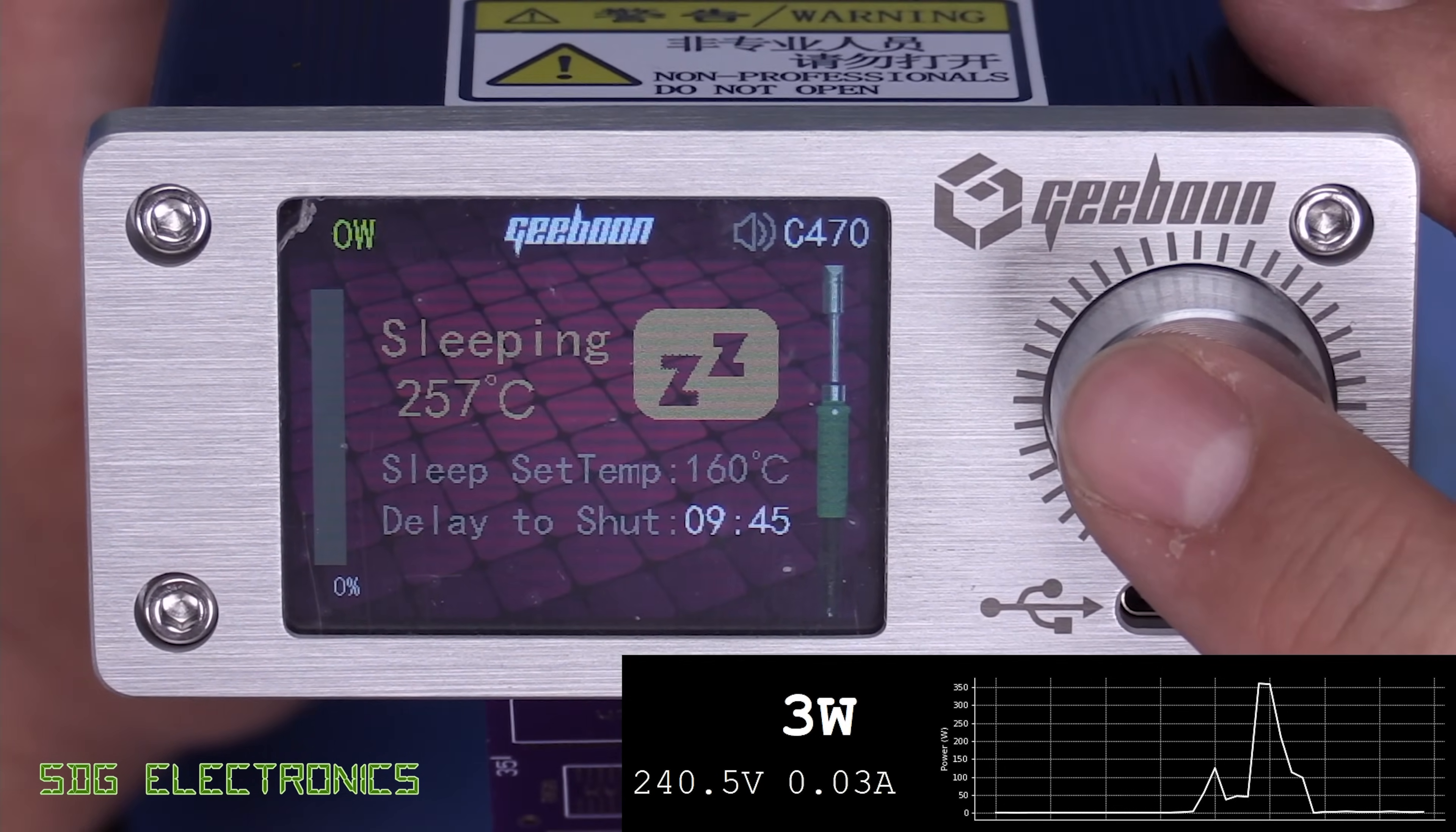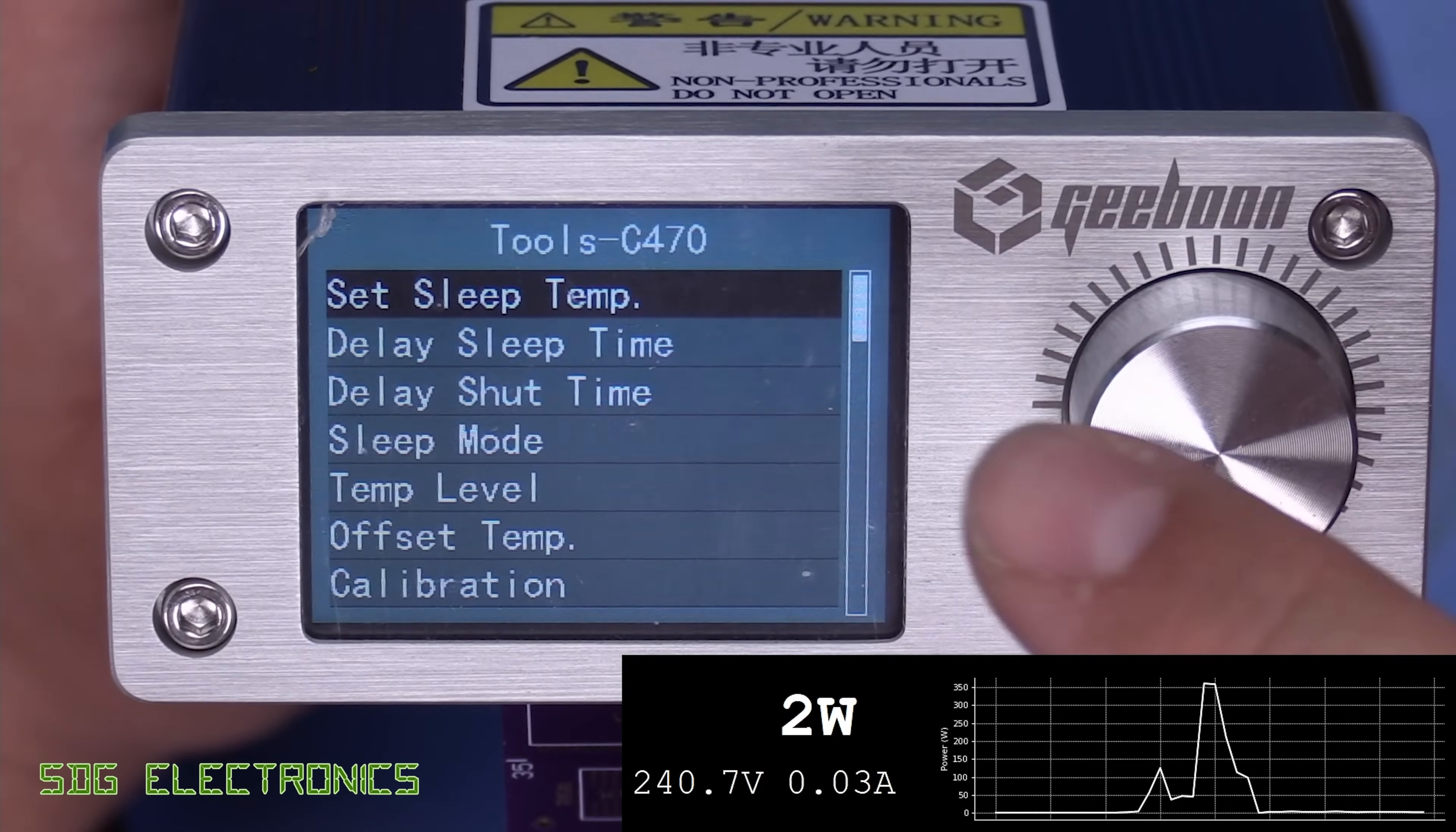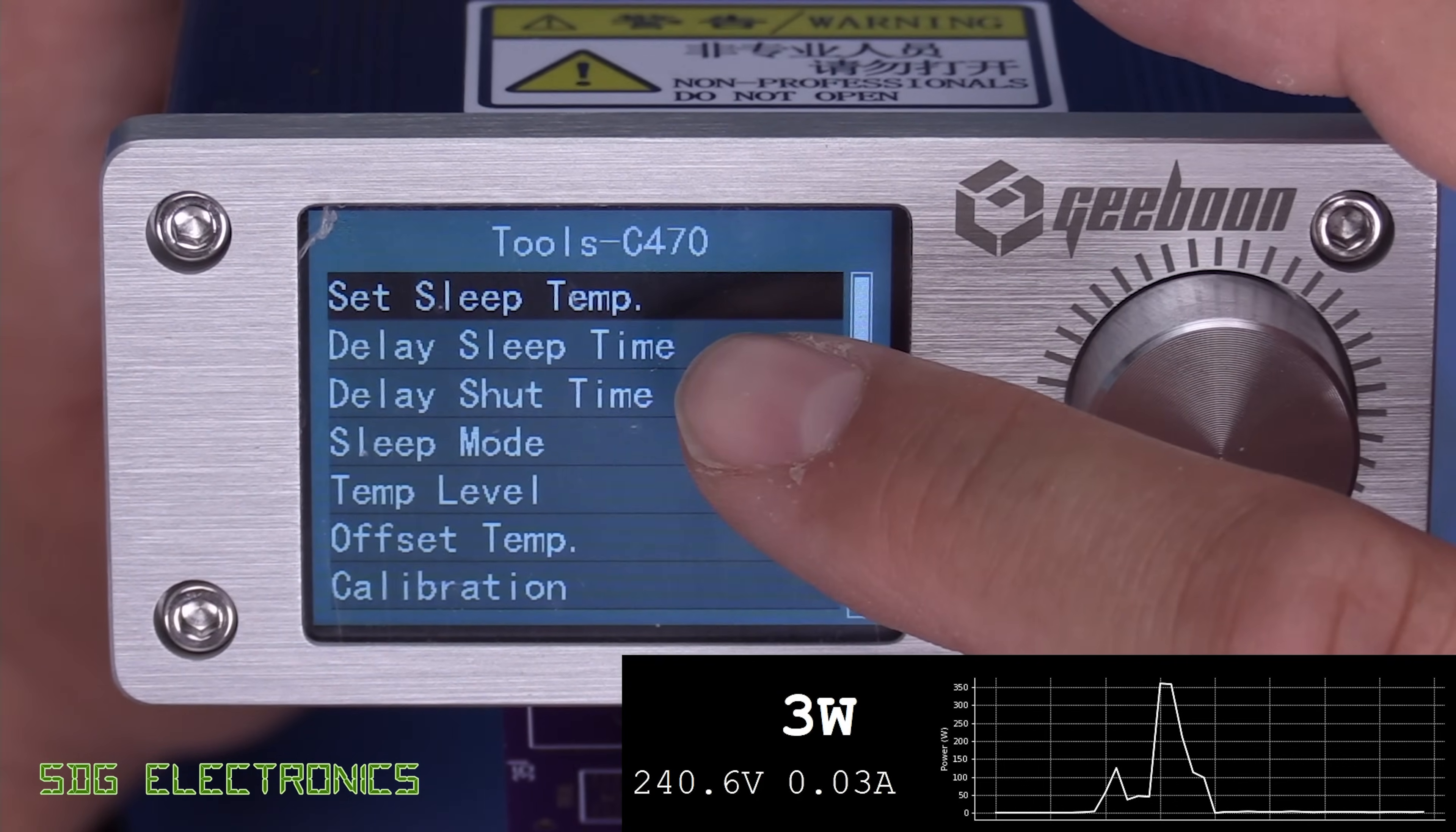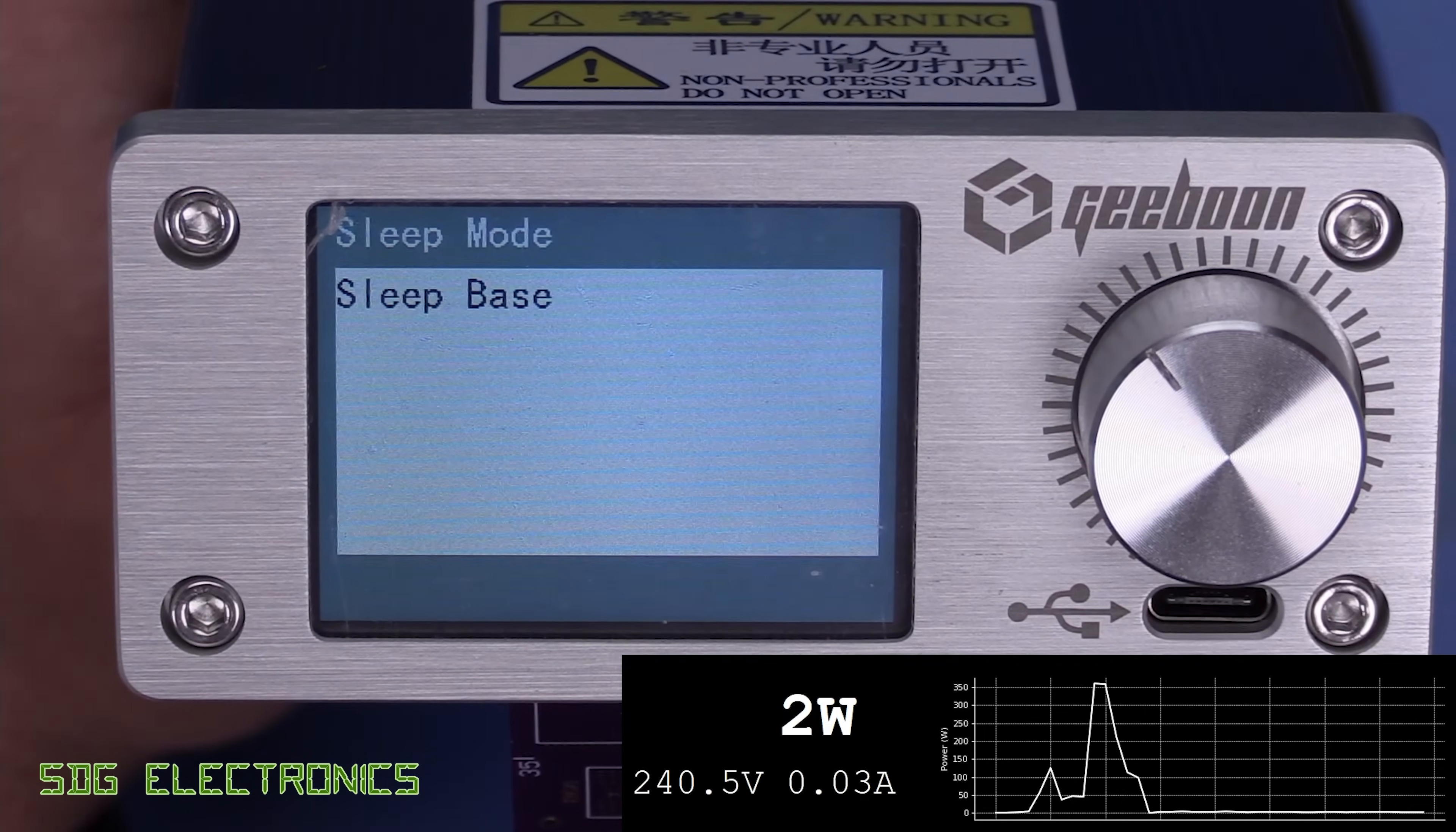And to change those presets, we've got a new menu item that says tools once we connect the handpiece. So it's detected we've got the C470. And we can set some settings specifically to that handpiece. So the sleep temperature, the time between going to sleep and shutdown mode, and the sleep mode as well.